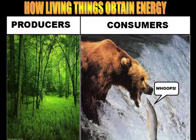Hi there, boys and girls. Welcome to today's vodcast on how living things obtain energy. Living things obtain energy by getting food. As we spoke about, organisms make energy by combining food with oxygen, and that creates a molecule of ATP that fuels our bodies.